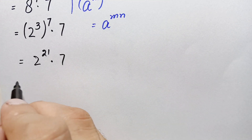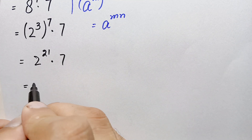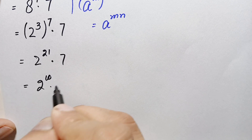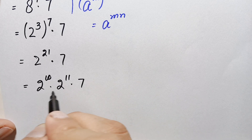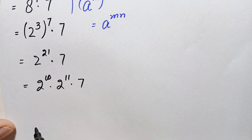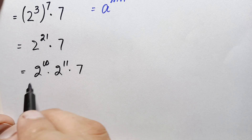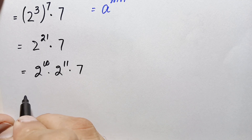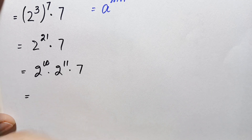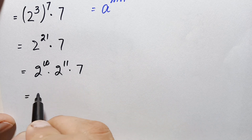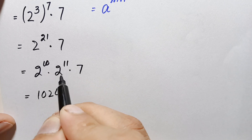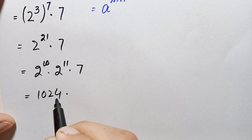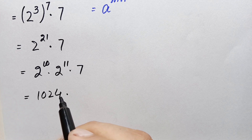Next, we can write 2 raised to power 21 as the product of 2 raised to power 10 times 2 raised to power 11, times 7. Since the base is the same, adding the powers gives us 2 raised to power 21. Now, 2 raised to power 10 is a very famous number used in many videos — it is equal to 1024.